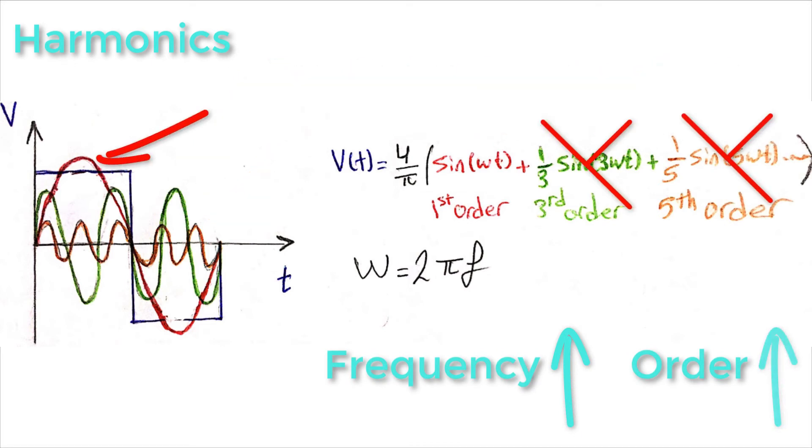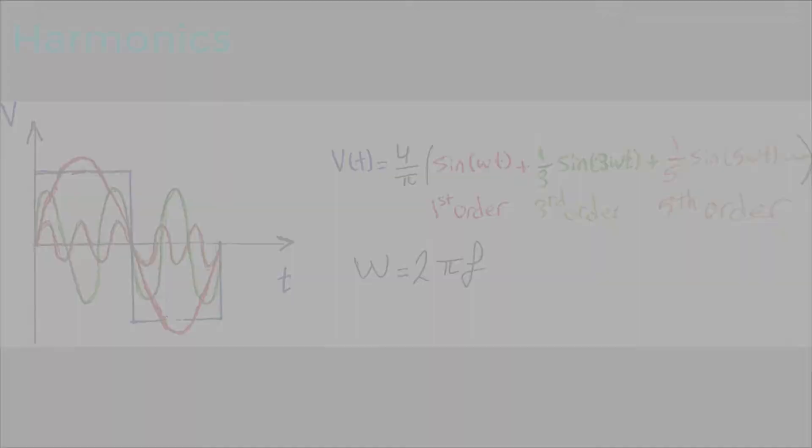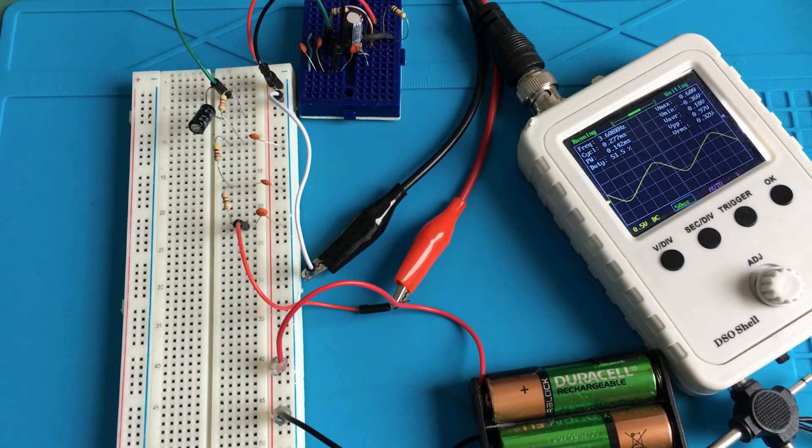So a low-pass filter will allow me to cancel all the harmonics except the first-order harmonic, which has the same frequency as the input square wave signal. That's why a sine wave signal appears at the output when feeding a square wave signal to the filter.